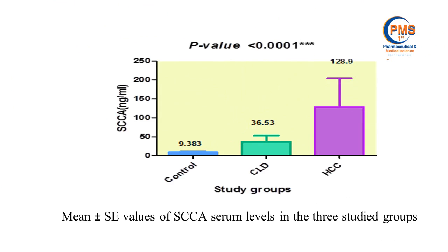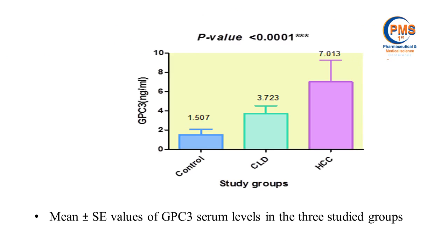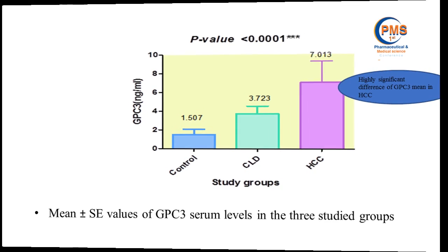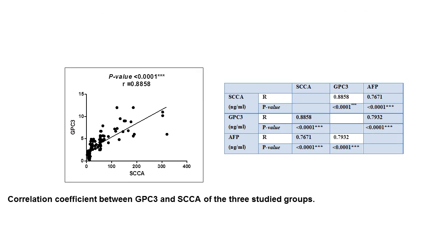The mean ± standard error values of squamous cell carcinoma antigen in the three studied groups showed a highly significant difference of squamous cell carcinoma antigen mean in the HCC group. Similarly, the mean ± standard error values of Glypican-3 serum levels showed a highly significant difference of Glypican-3 mean in HCC. There was also a highly significant correlation between Glypican-3 and squamous cell carcinoma antigen.